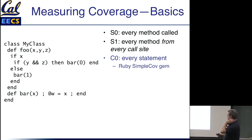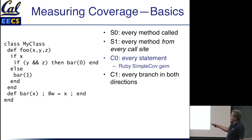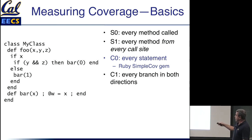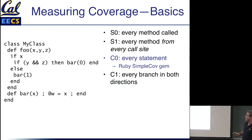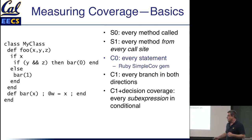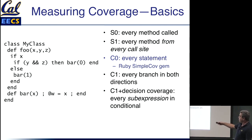There are other measures of coverage beyond C0. C1 coverage says you've taken every branch in both directions. C0 just says this line was touched, but it doesn't necessarily say both clauses of the if were executed. C1 says make sure you've taken every branch in both directions. And you can go further with C1 plus decision coverage: not only does this branch have to take both the if path and the else path, but every combination of sub-expressions within a conditional that could make the if go either way must be covered.